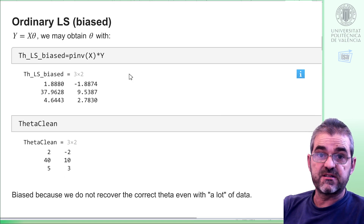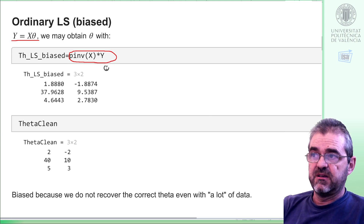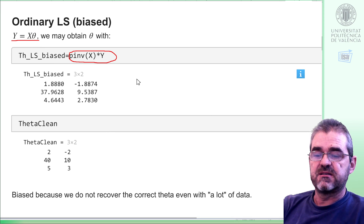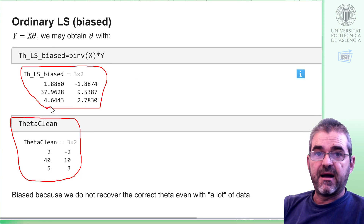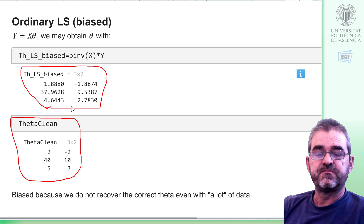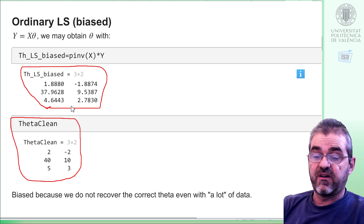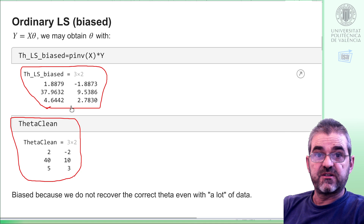First, we will check that plain ordinary least squares with the pseudo-inverse formula, estimating theta by least squares, results in a biased estimate. Indeed, the true model had these coefficients. And if I evaluate the pseudo-inverse based formula, I get a different result. I have 90,000 samples — quite a lot. If I don't get the true theta with 90,000 samples, I don't think I will get it with more of them. If I repeat and repeat, the numbers are always around the same values, all lying on a given side above or below the true parameter.